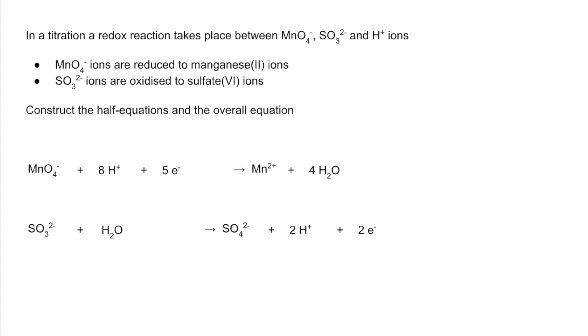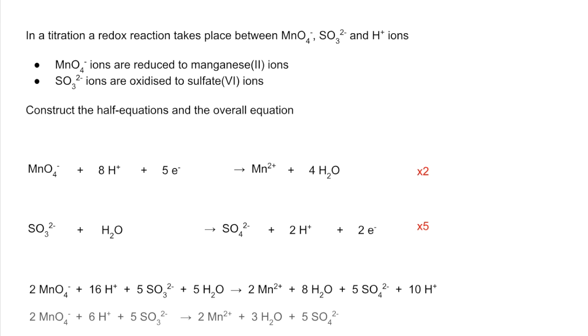To get the overall equation we need to get the electrons to cancel out when we add them together, so we're going to multiply the top one by 2 and the bottom one by 5. That gets the electrons up to 10. When you do that and add them together you get this horrible looking thing. We've got H pluses left and right and waters left and right, so we need to cancel down to get that.